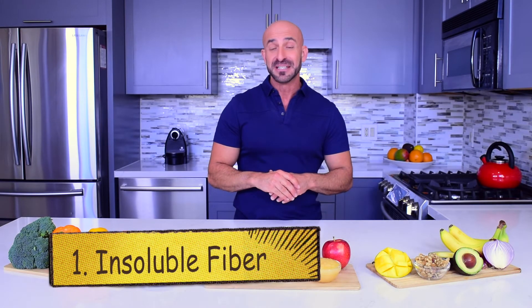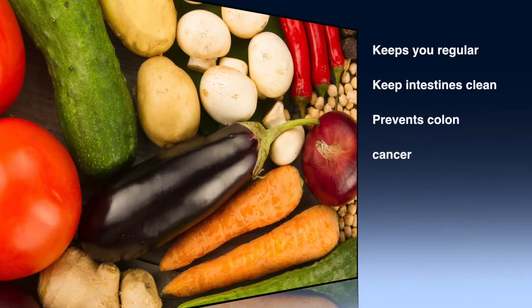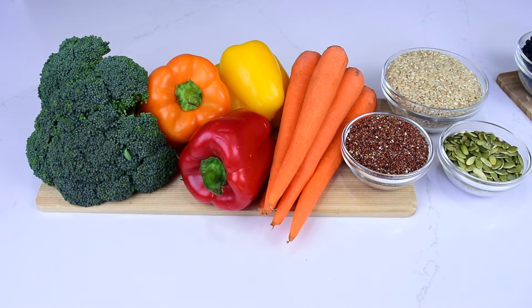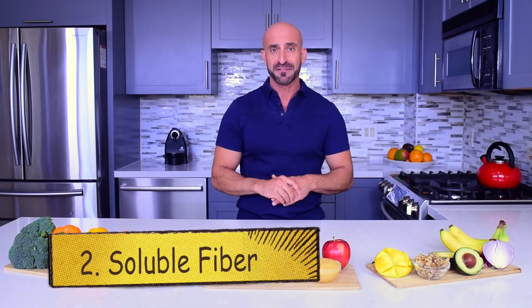The first type of fiber is called insoluble fiber. This fiber cleans the pipes — it does this by making food go through your intestines faster. Insoluble fibers help with preventing constipation, keeping your intestines clean, and preventing colon cancer. Insoluble fibers are mainly found in vegetables, seeds, and whole grains such as quinoa and brown rice, among other foods.